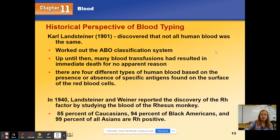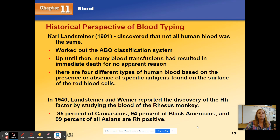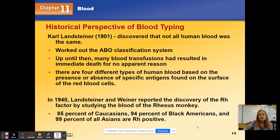You can see at the bottom of the screen the different percentages for different races that are Rh positive, and for whatever race we're looking at, the vast majority is positive. That's also something we're going to look at in labs — not only are you going to try to determine whether somebody is A, AB, O, or B, you're also going to try to determine if they are Rh positive or Rh negative.